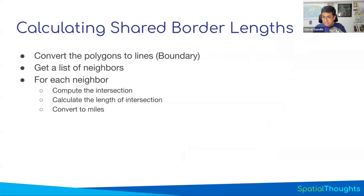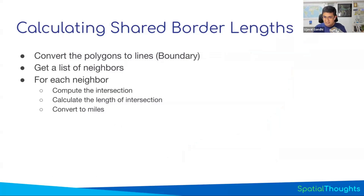Here's how we do it — a demo with step-by-step instructions from the blog post. We get a list of neighbors, and this is where array_foreach comes in. For each neighbor, we say: for this polygon to the neighbor polygon, intersect it. When you intersect two polygons, you get a line. Compute the length of each resulting line, you get it in meters, convert to miles, and you now have the length of shared border for each of the neighbors.